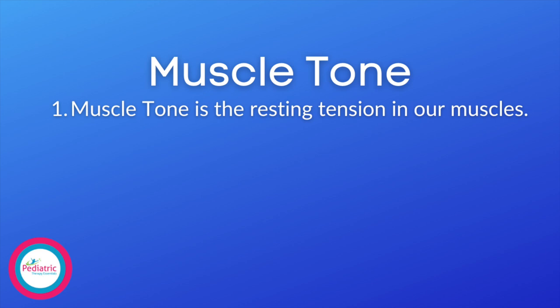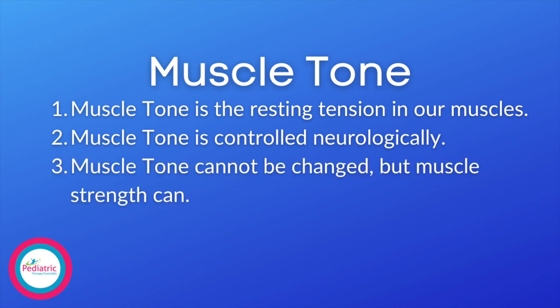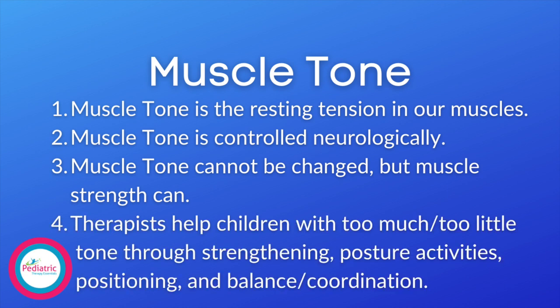That was a lot of information — pat yourself on the back if you made it all the way through! Let me do a quick review of the highlights. First, muscle tone is the resting tension in our muscles. Second, muscle tone is controlled neurologically, not under our voluntary control. Third, muscle tone cannot be changed, but muscle strength can. And finally, therapists can help children with too much or too little muscle tone maximize their potential through activities that work on strength, posture, positioning, balance, and coordination.